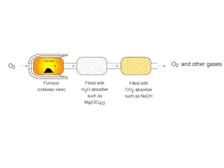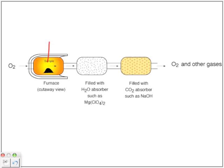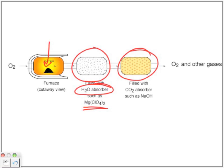Let's look at a schematic diagram of one of these analyzers. We have oxygen coming in, and in a furnace we input our sample. Then we have a water absorber, such as magnesium percarbonate, to collect water. We also collect carbon dioxide using a CO2 absorber — a common one is sodium hydroxide — and then there is an output of oxygen and other gases.